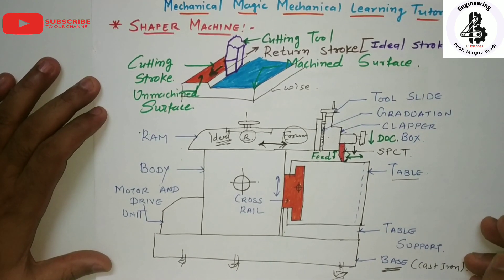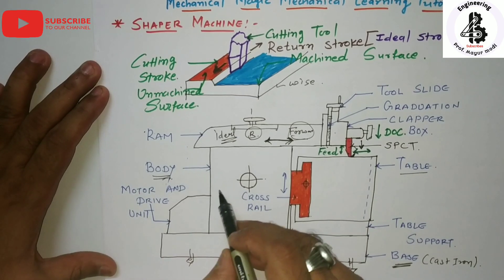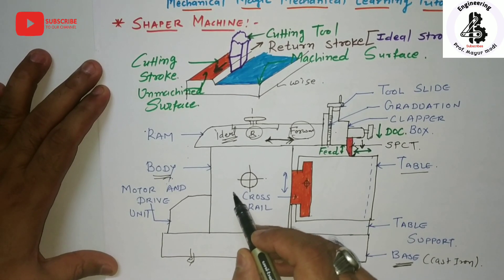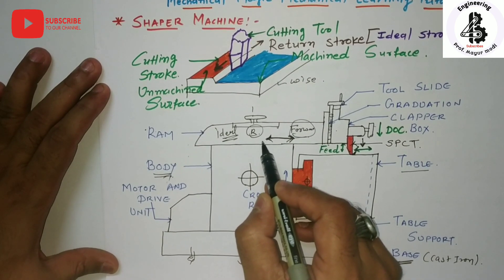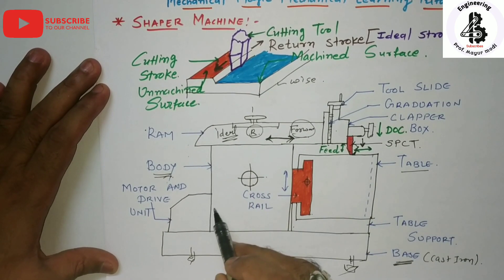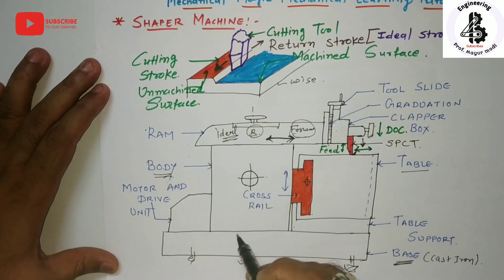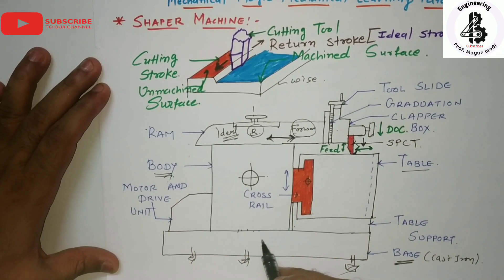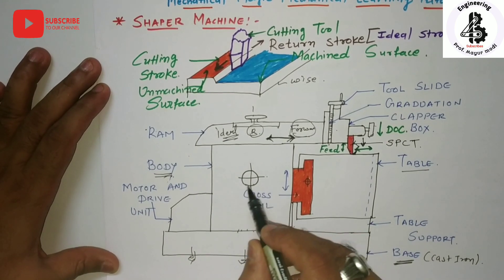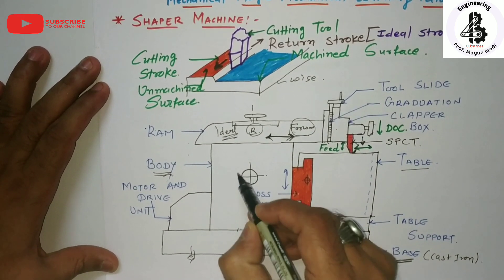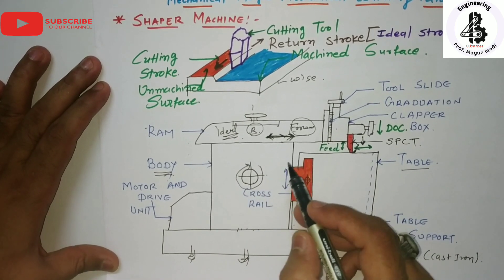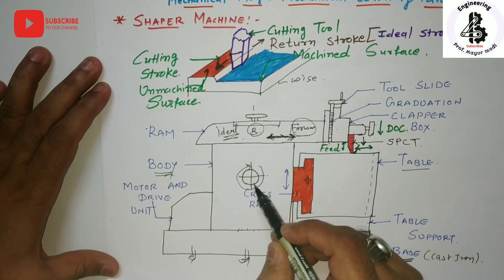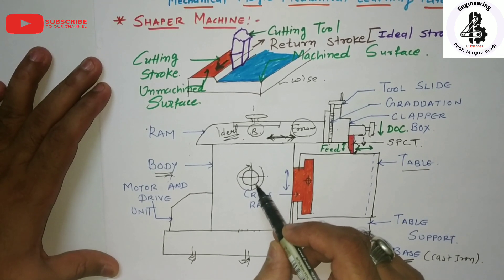The second important part is the column, or body. It is a ribbed box-like casting; the top of the column carries the ram, which slides on the shaper machine body. The front face of the column is machined and holds the table, which is supported from the base. The column contains the crank as well as the slotted mechanism, which is used to convert rotary motion into the reciprocating motion of the ram. All these mechanisms are contained within two plates cast into the body.